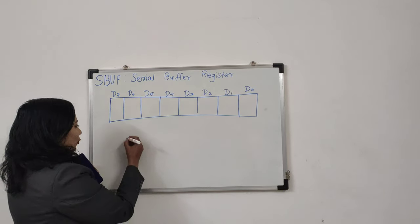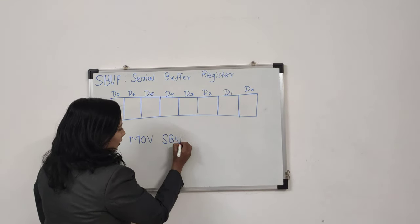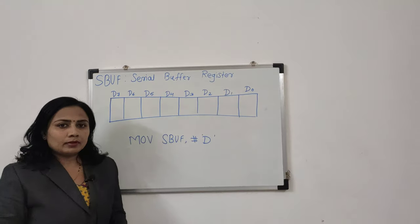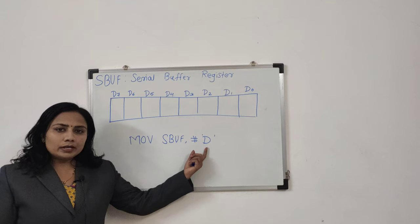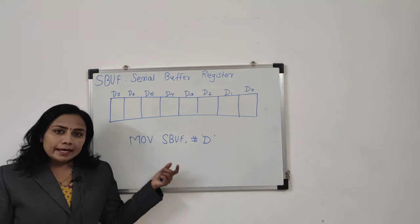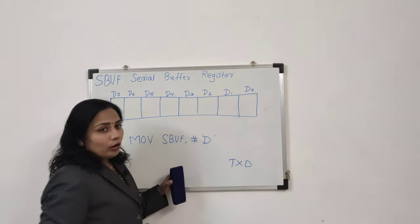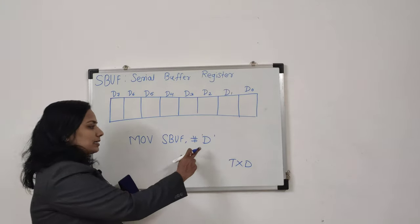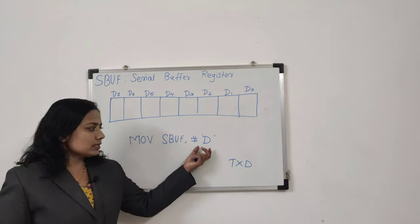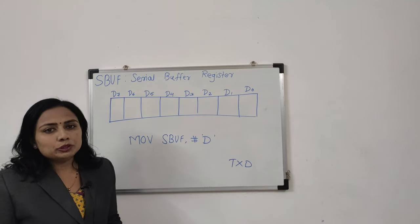For example, in assembly language programming, if I write the instruction MOV SBUF, #'D', the meaning of this instruction is that I want to transfer the letter D into the SBUF register. That letter will then get transferred serially using the TXD pin of the microcontroller. The ASCII value of the letter D will be transferred, and remember that while transferring this ASCII value, a start bit and stop bit will be added into the transmission process — this is compulsory.